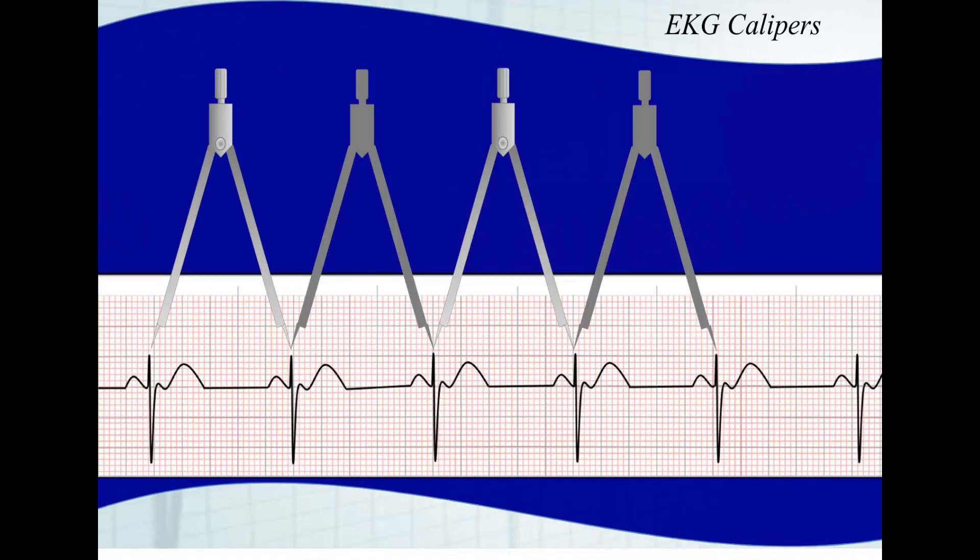Here the EKG caliper is being used to determine regularity. You place it between two R waves or two waves on an EKG, and then you spin it on one point. If it matches up from here to here, and then from here to here and continues, then we say the rhythm is regular.